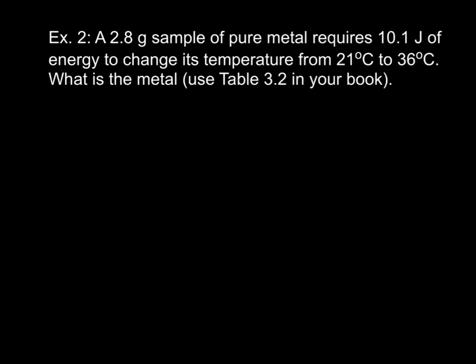Alright, last example for the night. And then you guys can do whatever it is you need to do or whatever you want to do. Please pause the tape now and copy down the example. Okay, hopefully you copied down the example in your notes. A 2.8 gram sample of pure metal requires 10.1 joules of energy to change its temperature from 21 degrees Celsius to 36 degrees Celsius. What is the metal? You're going to need your book. If you don't have it, I will help you out now. But I do want you to check Table 3.2 in your book when you do the book problems.